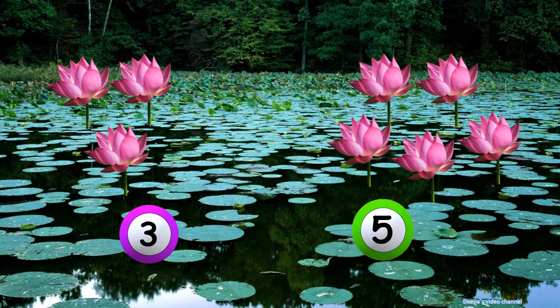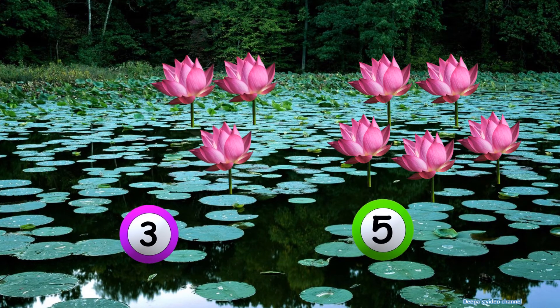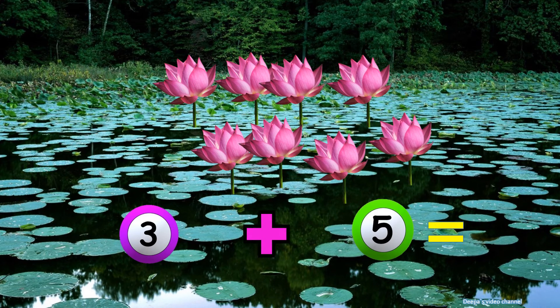There are three lotus flowers in this pond. On its other side, you can see five more lotus flowers. We add all flowers and get a total of eight lotus flowers.